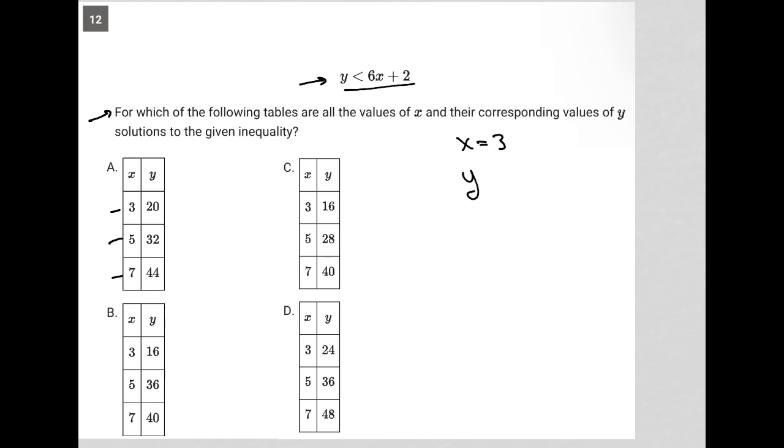When x equals 3, I have y is less than 6x plus 2. I replace x with 3, so I'd have y is less than 6 times 3 plus 2. Therefore, y is less than 6 times 3 is 18, and then plus 2.